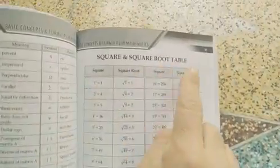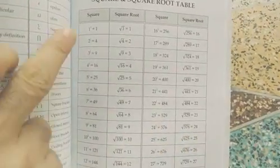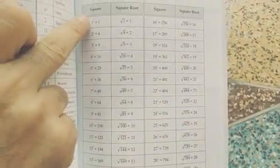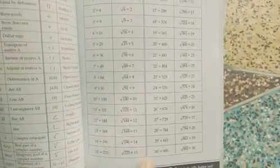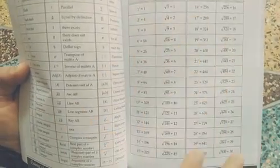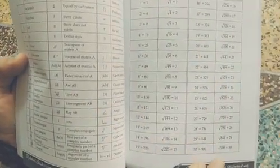The 2nd chapter of this book is square and square root table. It contains numbers from 1 to 30, the squares of those numbers from 1 to 30, and the reverse process — the square root from 1 to 900.